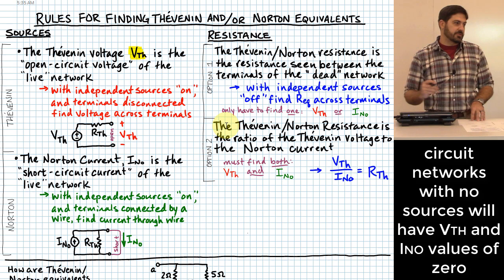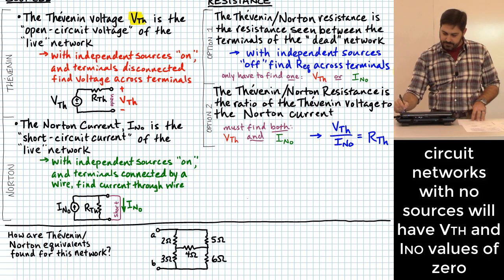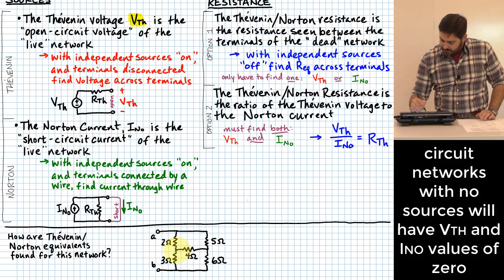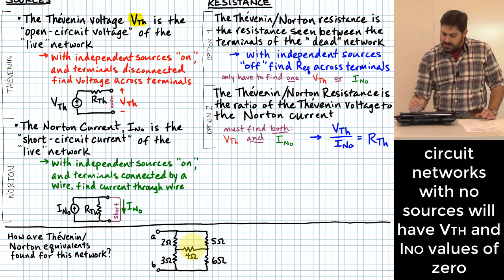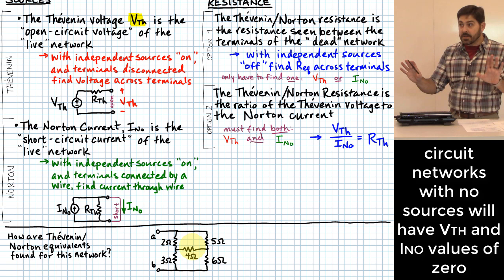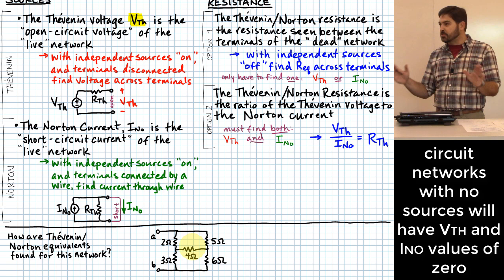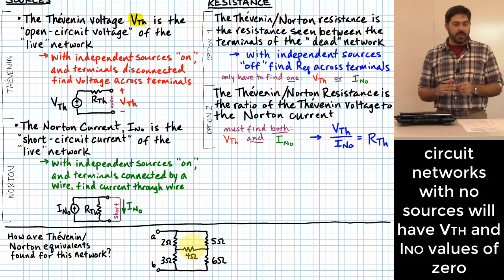Now let me give you another one where maybe neither of these options may work. Look at this circuit — a little network shaped like an H, with five different resistance values and no dependent sources. It's just resistors. So what would the Thevenin or Norton equivalent be for that network?